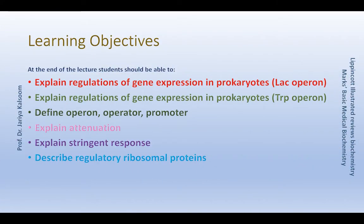In prokaryotes, regulation of gene expression occurs at the level of transcription. It is mediated by binding of trans-acting proteins to cis-acting regulatory elements on the DNA molecule. Transcription control in prokaryotes can involve initiation or premature termination of transcription.